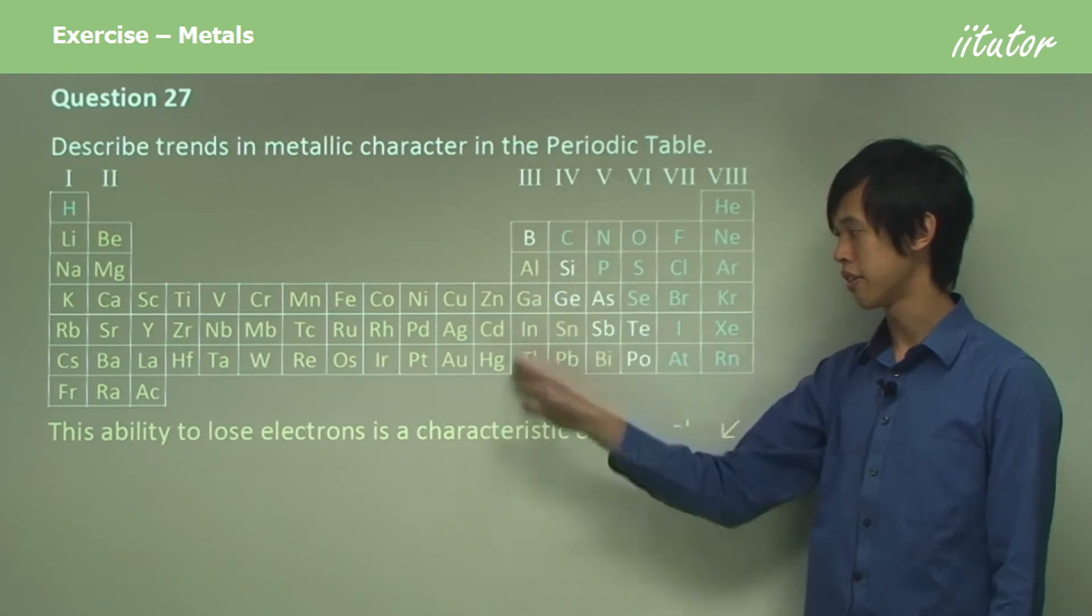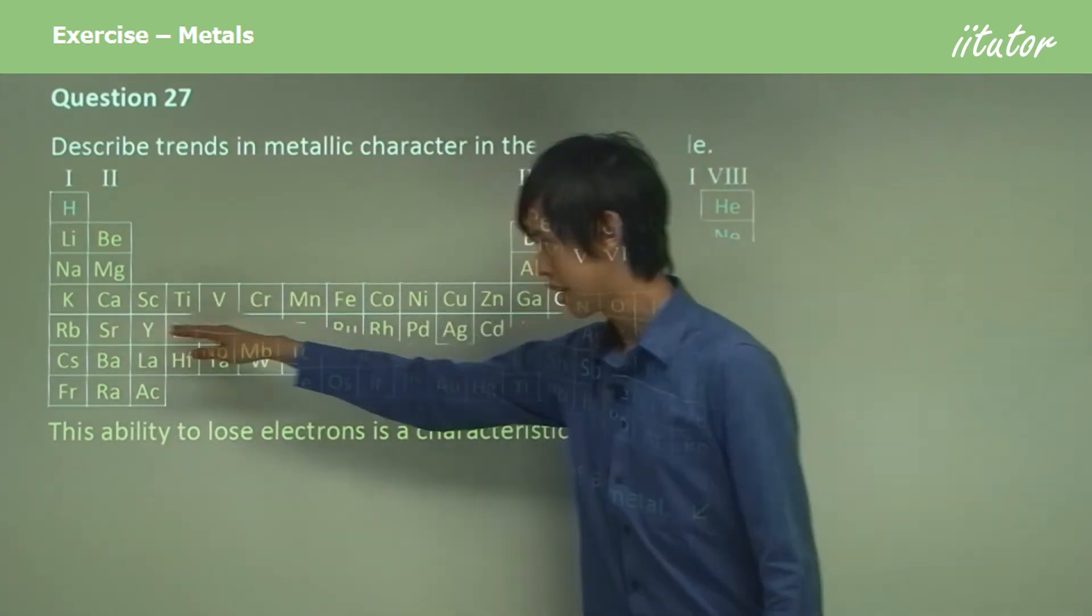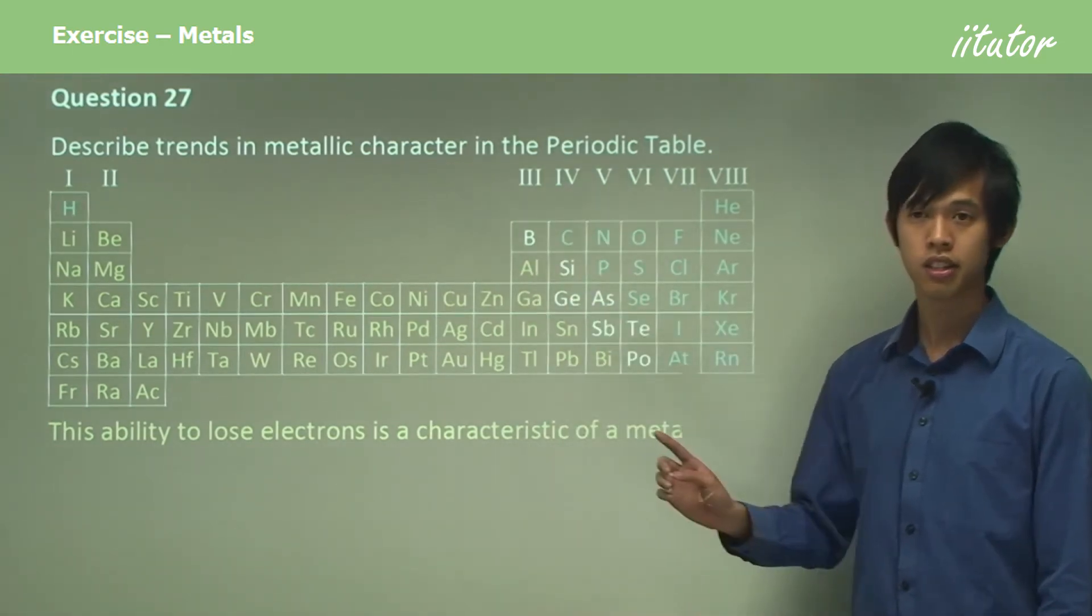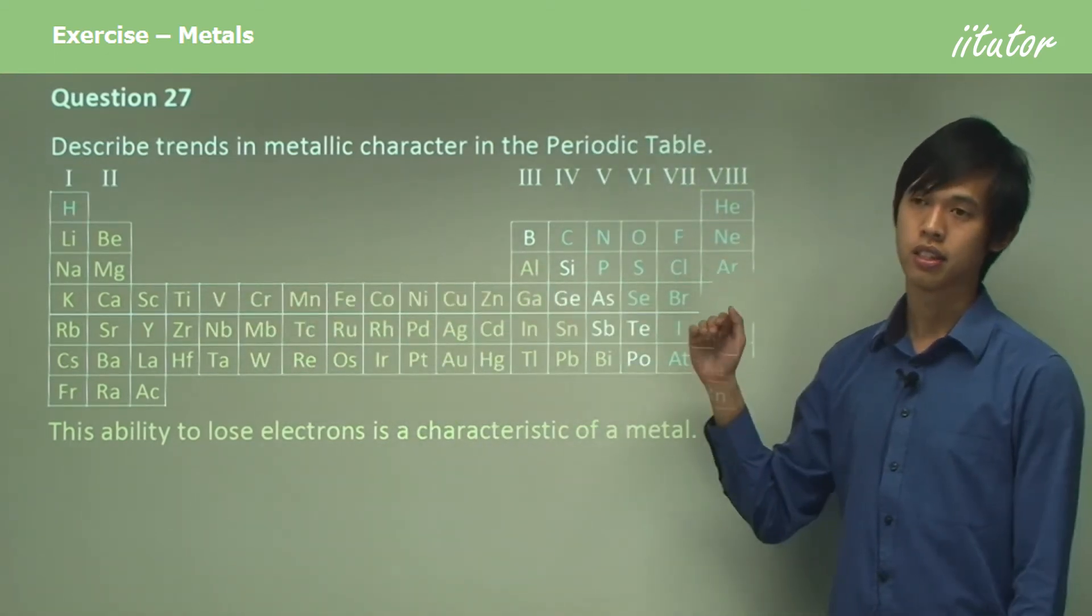So as you go down a group, the metallic character increases. As you go from left to right, the metallic character decreases. So down a group, metallic character increases. Across from left to right, metallic character decreases.